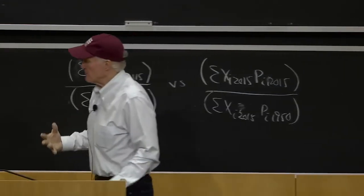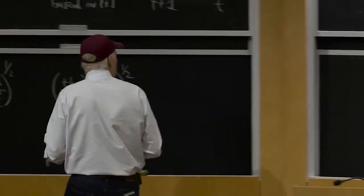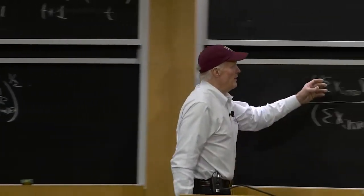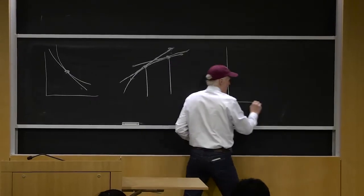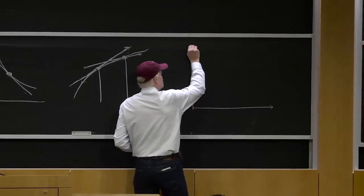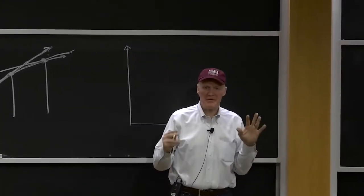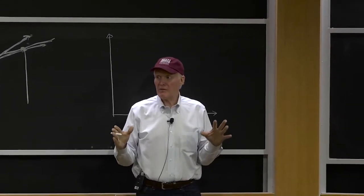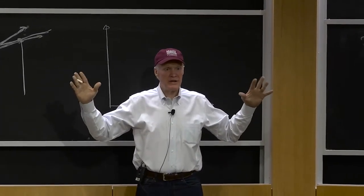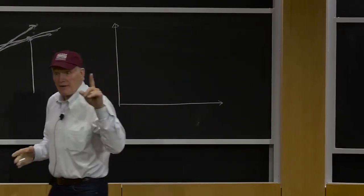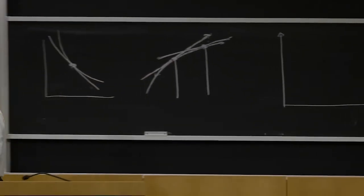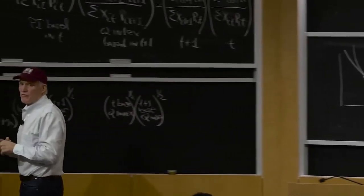Let me show you a picture. Let's think about a really simple world where only one price was changing. Let's assume that we lived in a world in which all the prices in the economy were constant except for one. There was only one price that was changing over time.